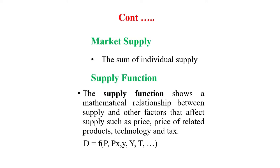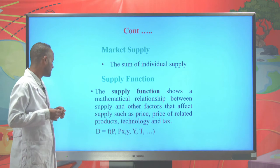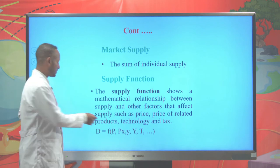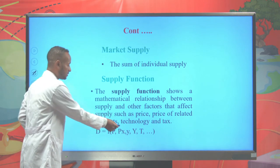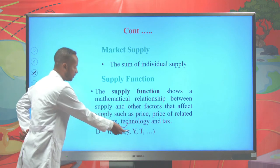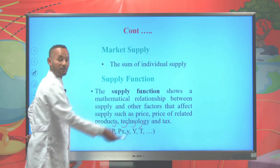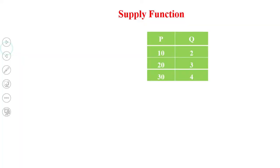The market supply is the sum of individual supply. Now let's see the supply function. The supply function shows a mathematical relationship between supply of a commodity and those factors that affect supply, such as price of a commodity, price of related commodity, income of the producer, tax imposed by the government, and the likes.